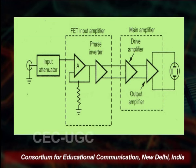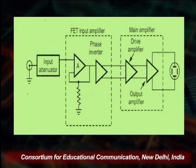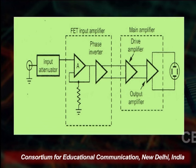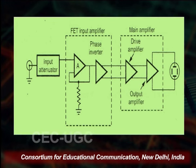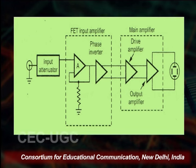On the left-hand side we have a FET input amplifier, and on the right side we have the main amplifier that will amplify the vertical signal. This FET is used in the vertical amplifier — we use the FET amplifier and this is the main amplifier. Both amplifiers amplify the signal, and that is the output amplifier which gives the final output.